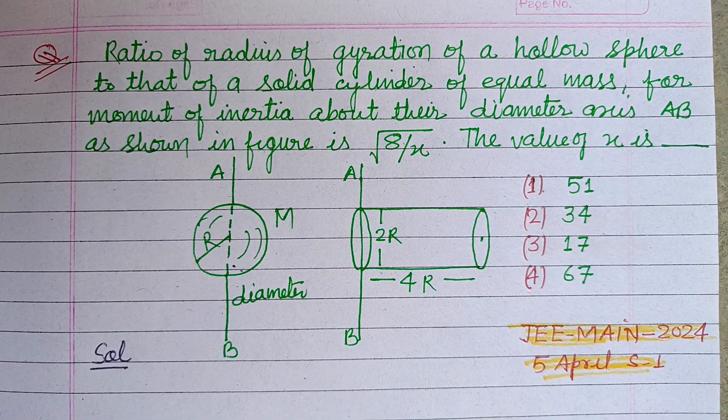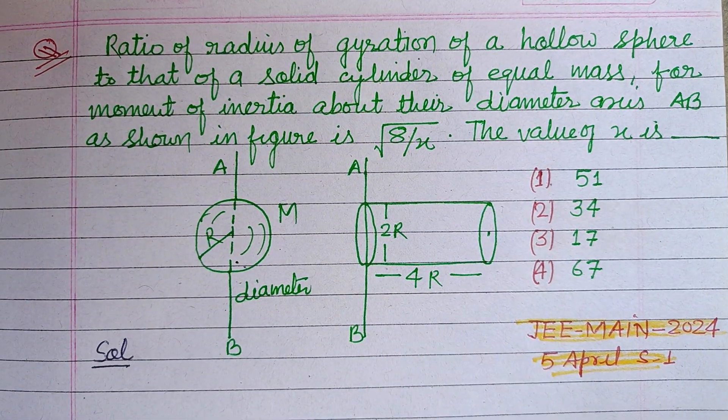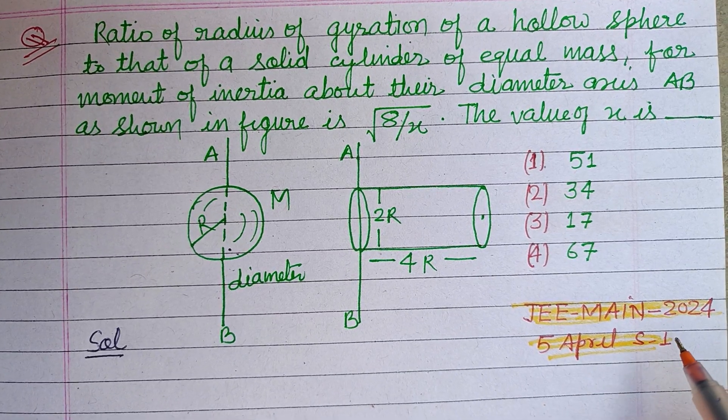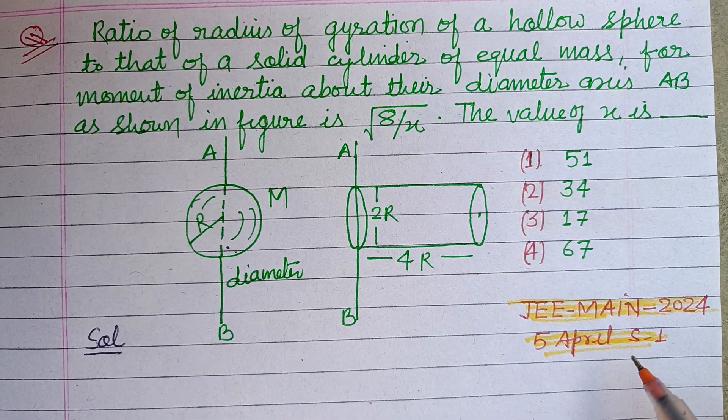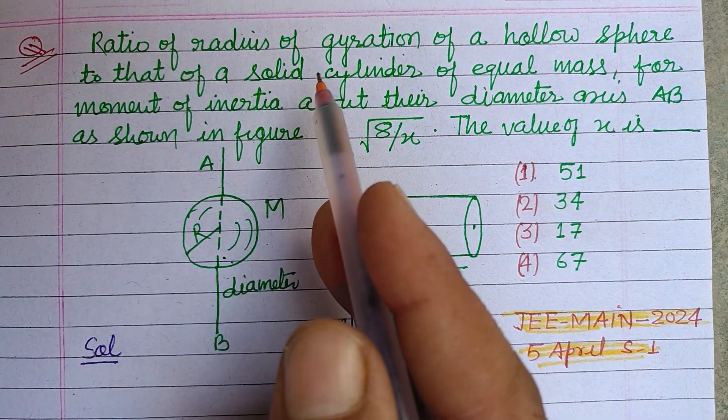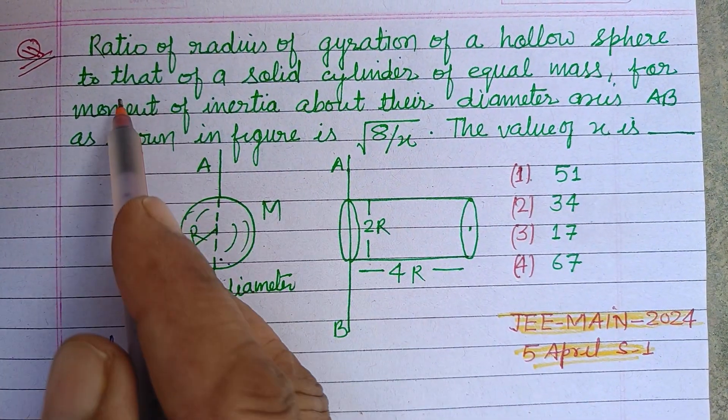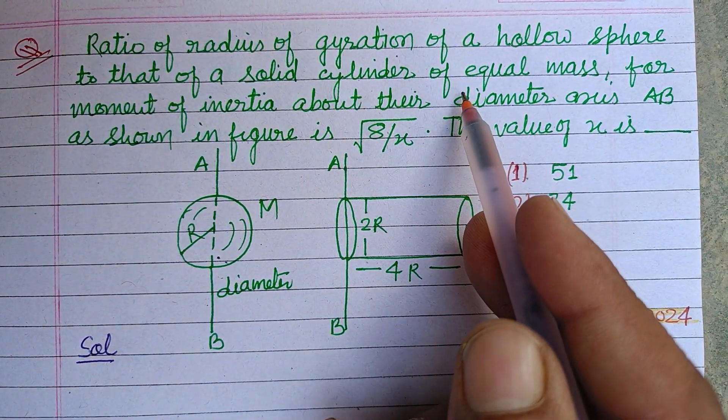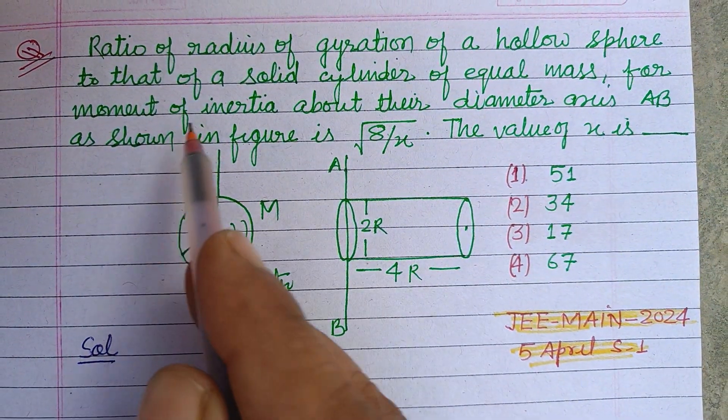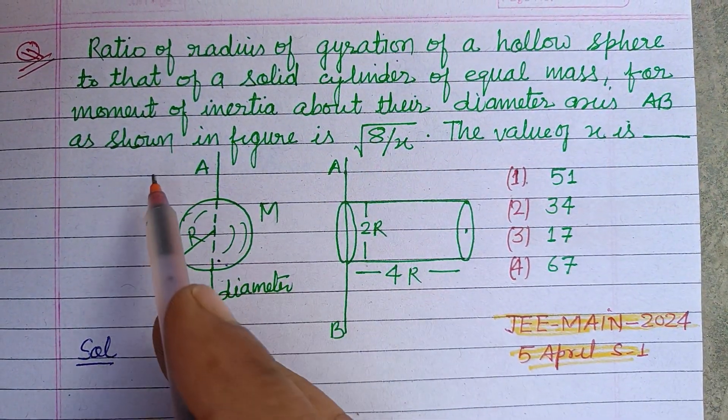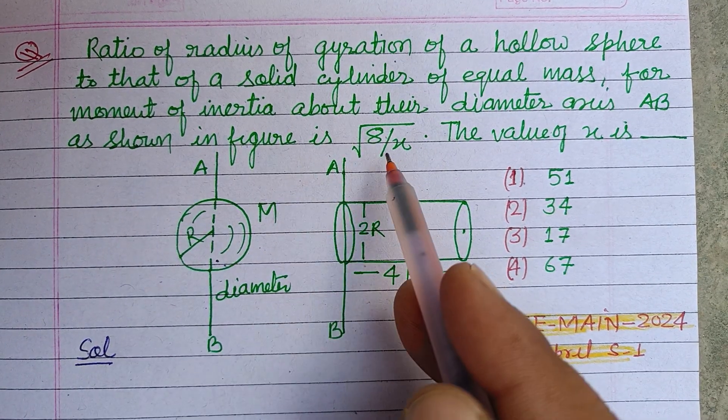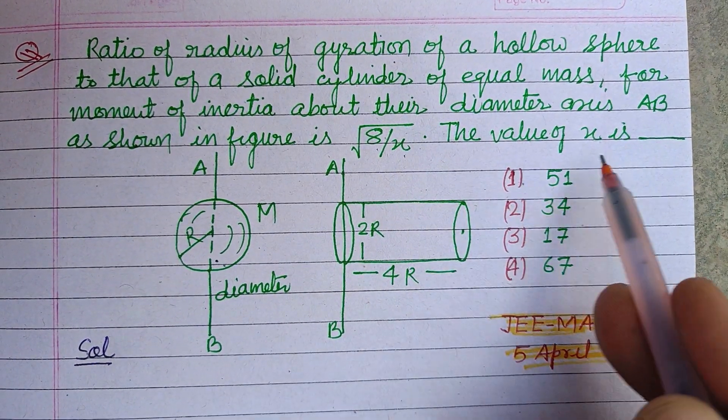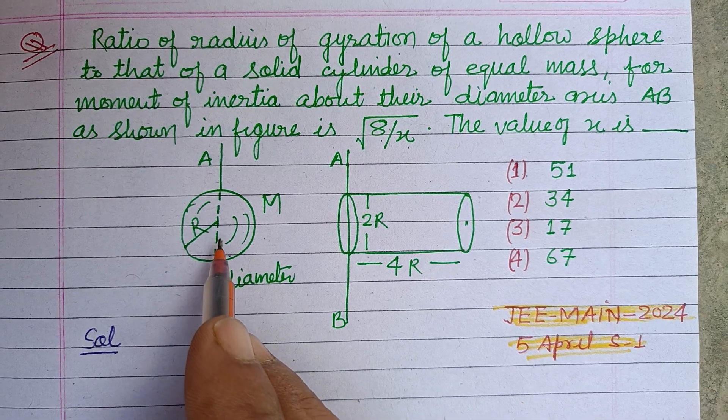Hello viewers, warm welcome to this YouTube channel. This is a question from JEE MAINS 2024 held on 5 April shift 1. The ratio of radius of gyration of a hollow sphere to that of a solid cylinder of equal mass for moment of inertia about their diameter axis AB as shown in figure is √8 over X, then the value of X is. So here students,